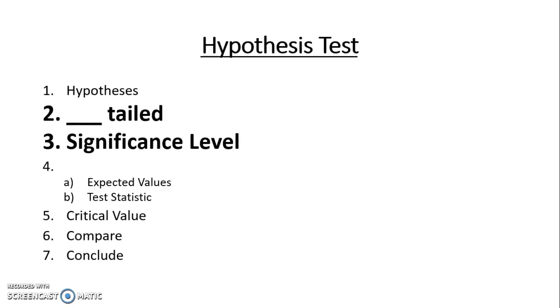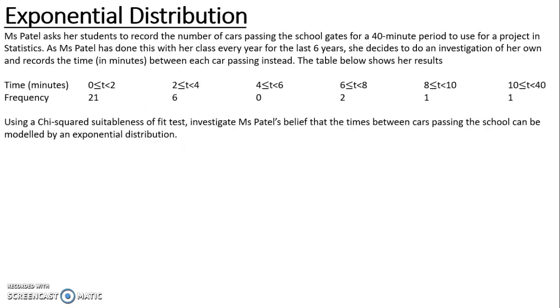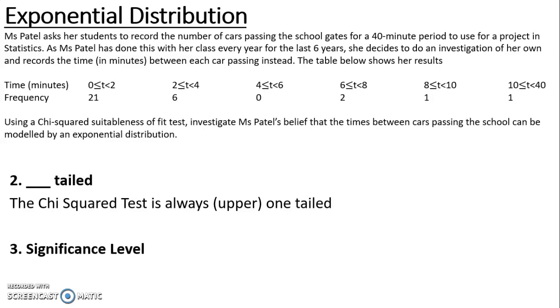Then we look at the tail and the significance level. This doesn't usually get us a mark but will help us later on, particularly with the critical value. A chi-squared suitable of fit or goodness of fit test is always one-tailed, and we always look at the upper tail. In this particular question we have not been asked for a specific significance level, so we are going to use the 5% significance level that is most commonly used.